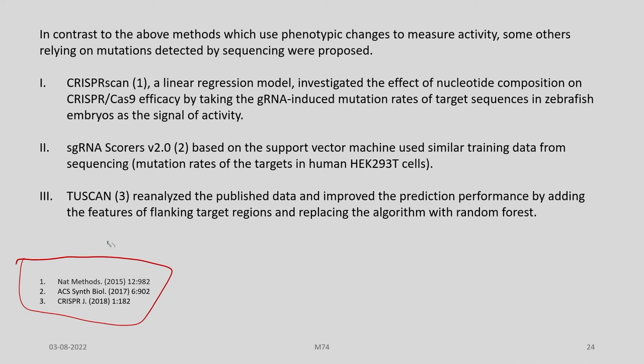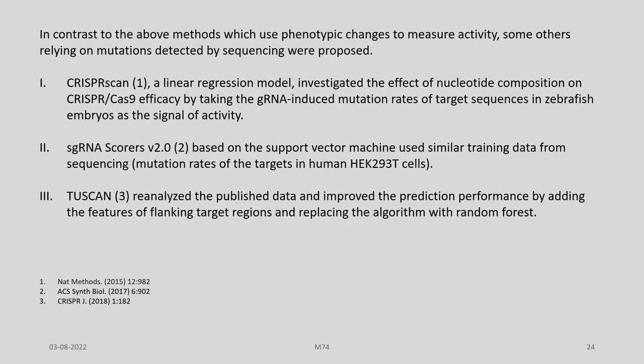CRISPR-Scan used a linear regression model to investigate the effect of nucleotide composition on CRISPR-Cas9 efficacy by taking gRNA-induced mutation rates of target sequences in zebrafish embryos as the signal of activity. sgRNA Scorer, based on a support vector machine, used similar training data from sequencing mutation rates of targets in human HEK293T cells. TASCAN reanalyzed published data and improved prediction by adding features of flanking target regions and replacing the algorithm with random forest.